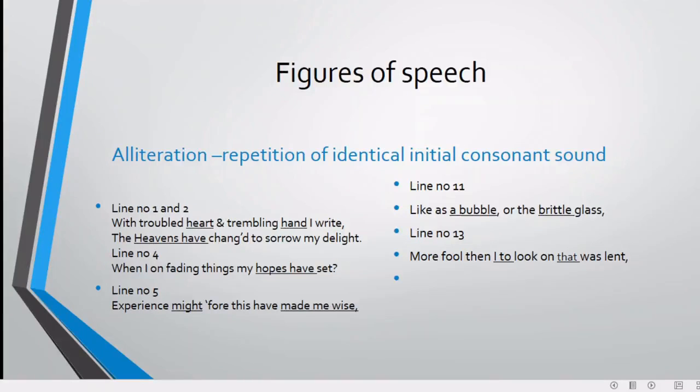While talking about poetic devices, first of all, we are going to learn figures of speech. The first figure of speech is alliteration. Alliteration is repetition of identical initial consonant sound. The use of alliteration gives a beautiful melodious music to the poem.